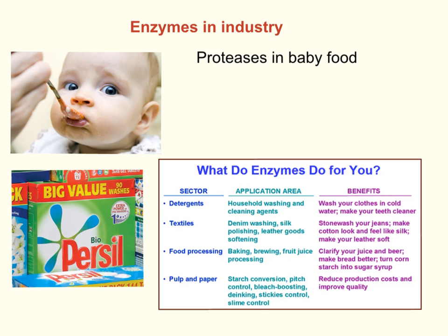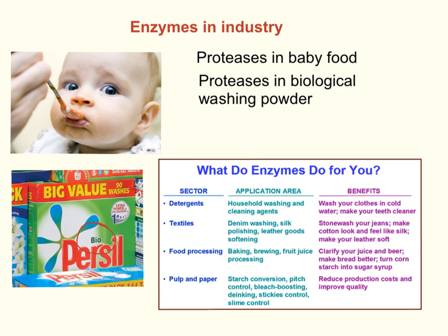Biological washing powders — marked 'bio' on the box — have enzymes in them that help to digest stains off your clothes. Non-biological washing powders exist because some people have allergies to the enzymes used, so people with eczema are more likely to use non-biological powders. Biological washing powders also have the advantage that you can wash clothes at a lower temperature to remove stains, because enzymes work at relatively cool temperatures — saving money on electricity by not having to heat the water to such a high temperature.